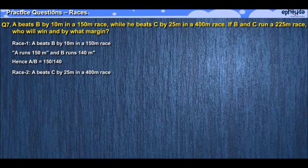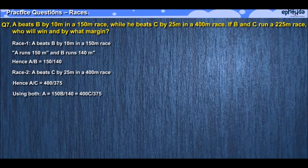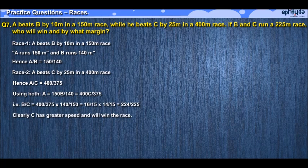You would see that A/C, the ratio of their speeds, must equal 400 upon 375. Equating A from both these equations, A can be written in terms of B and C, and that would on equating give a relationship between B and C. Hence the ratio of B and C would equal — after a couple of steps — 224 by 225. This fraction has a denominator which is larger than the numerator, clearly telling us that C has a greater speed and hence must win the race.